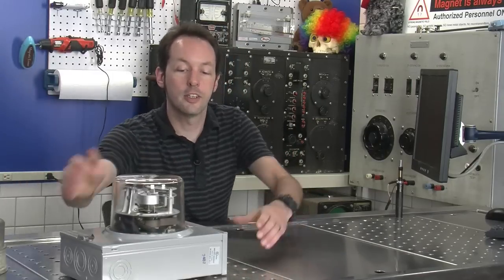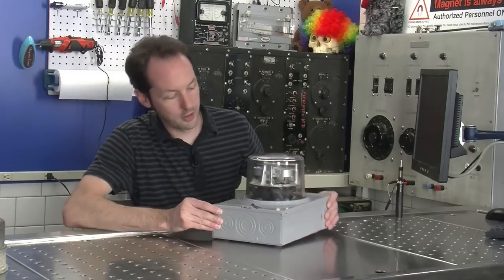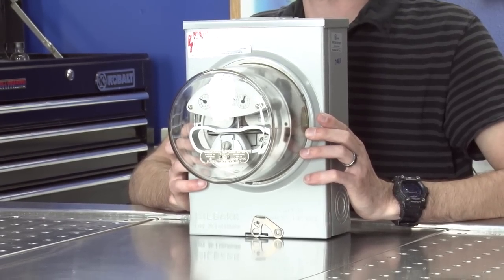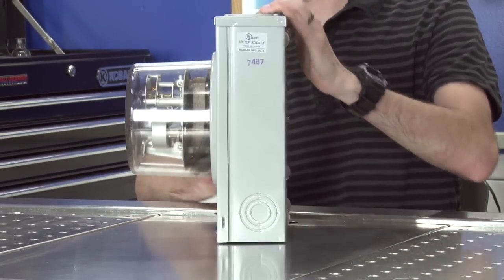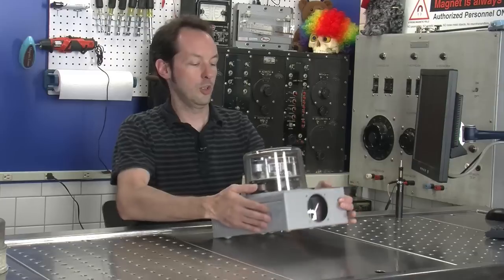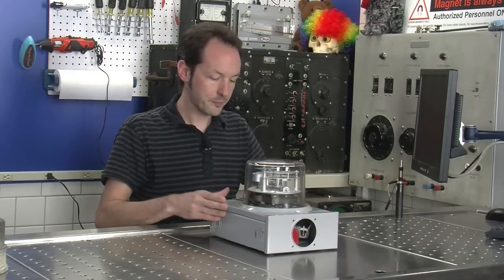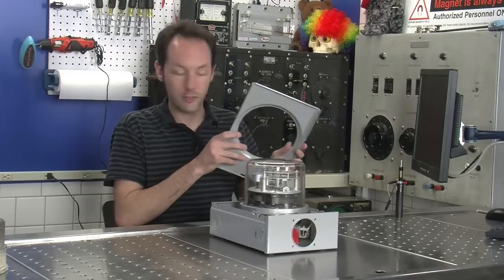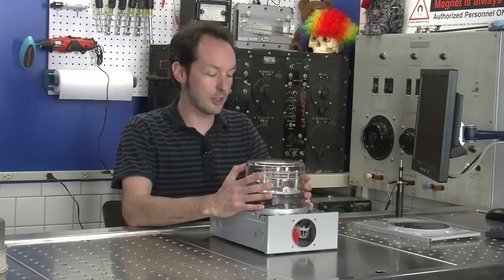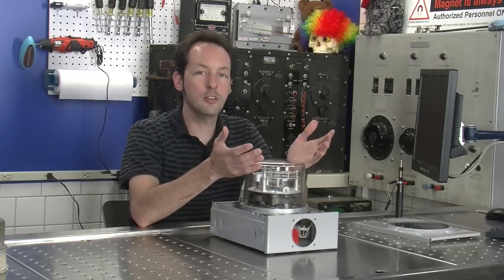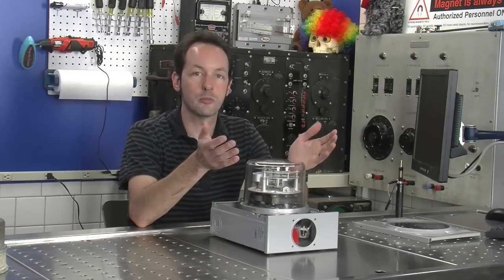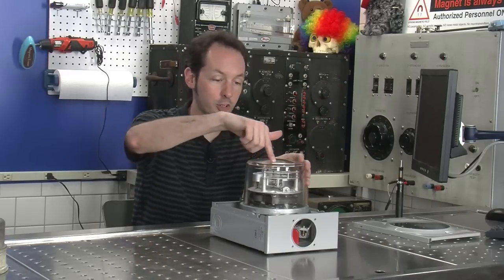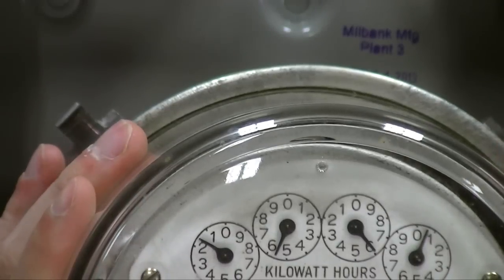These change depending on where you are in the world. This is a standard kilowatt hour electrical meter and what they measure is kilowatt hours, which is one kilowatt for one hour. If you have ten 100 watt light bulbs in a big chandelier, that's going to draw 1000 watts. If they operate for one hour then this meter is going to go up by one and that's how they bill your electric usage.